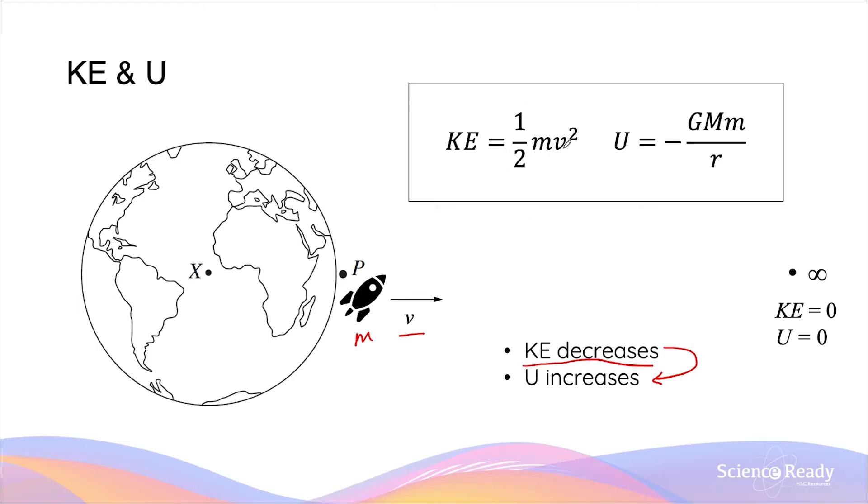The concept here I want you to think about is what would be the minimum velocity required for this rocket so that by the time it reaches this hypothetical point in the universe called the infinity point, its kinetic energy becomes exactly zero. And of course, as we discussed in another video, its gravitational potential energy also becomes zero.